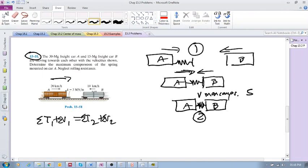In order to find s, my immediate response is to use conservation of energy, which is sum of T₁ plus sum of V₁ equals sum of T₂ plus sum of V₂. The sum of the kinetic energies of both particles plus the potential energy at state one equals the sum of the kinetic energy of both particles at state two plus the sum of the potential energy.